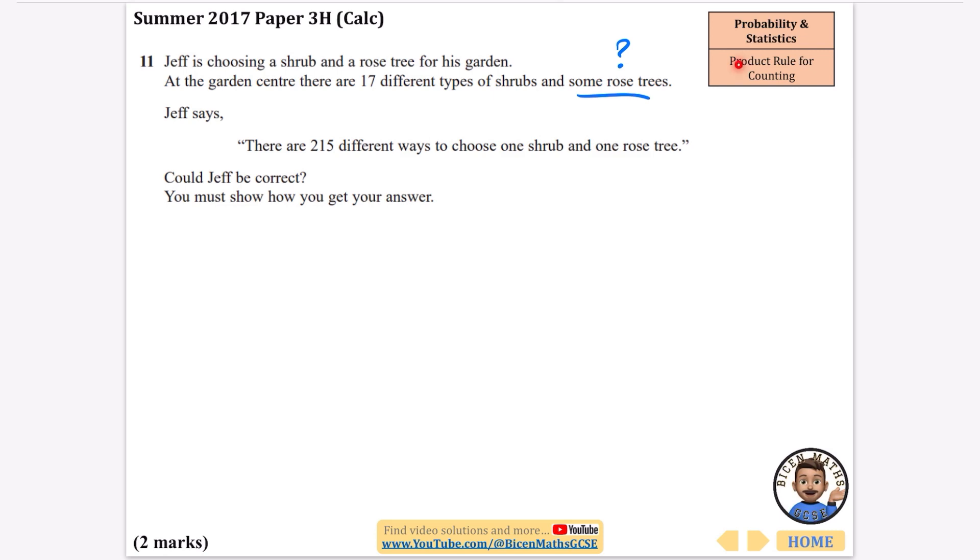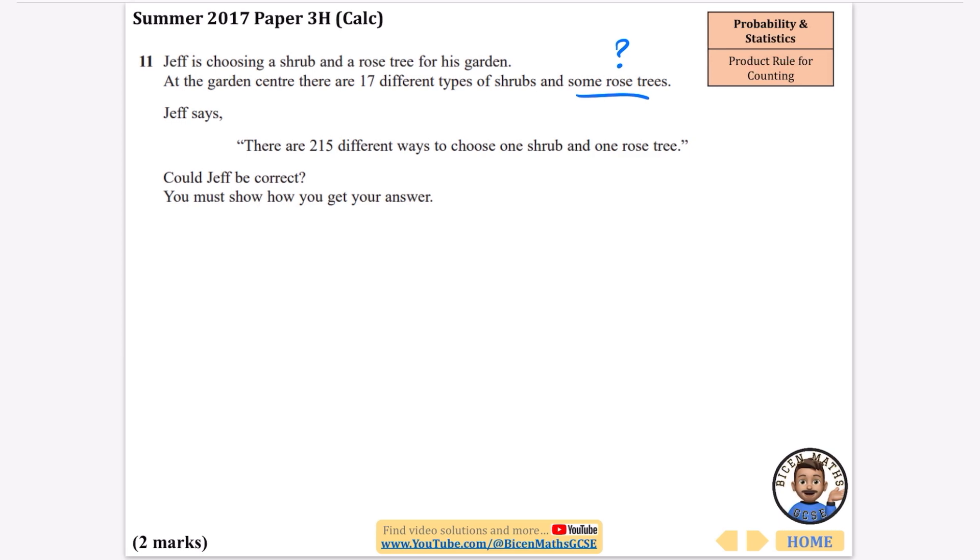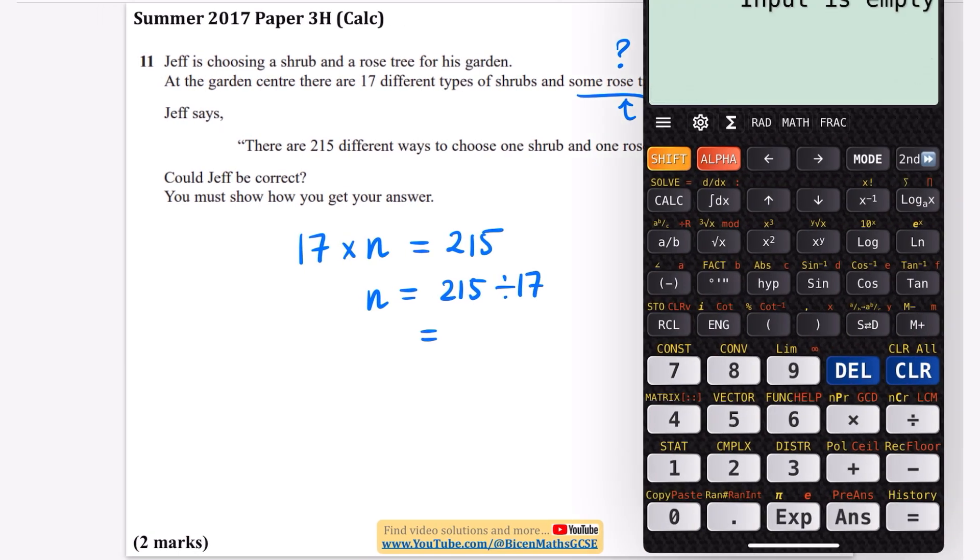Well, the product rule for counting does what you expect - it means you multiply these things together. So if there are 17 different types of shrubs and some rose trees, I'm going to let the number of rose trees be equal to n. What you would do is 17 multiplied by n to get the number of combinations, and Jeff thinks that equals 215. So n is 215 divided by 17.